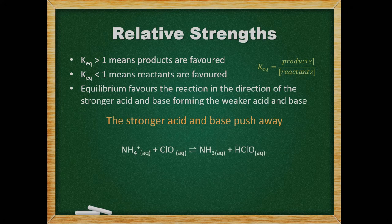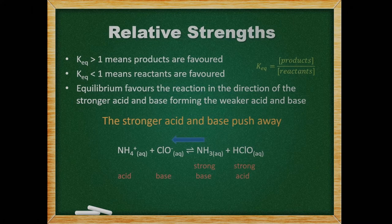Let's say we are given this equilibrium and we are told the reactants are favored. This means the equilibrium constant is small. From this we can conclude that hypochlorous acid is the stronger acid here and ammonia is the strongest base, since the strong acid and base push away.